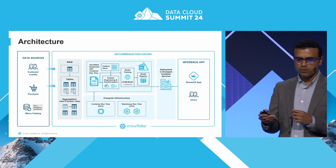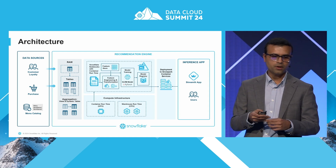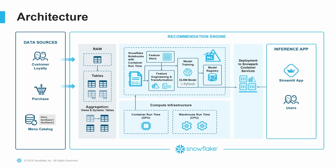The high-level architecture: we have three different datasets — customer information, menu-related information, and purchase history information. This is typical of any recommendations workflow you might want to build. We are going to use the Snowflake Notebooks environment with container runtime to build a distributed deep learning recommendation model using the PyTorch framework, register the model and deploy it in Snowpark container services, run some predictions, and visualize them in a Streamlit application.